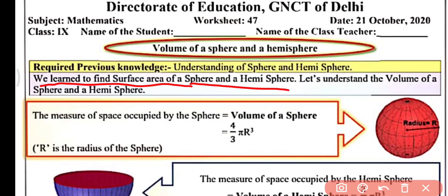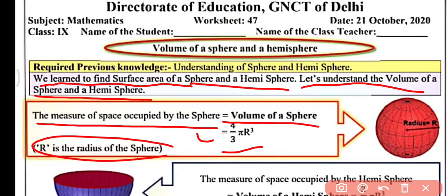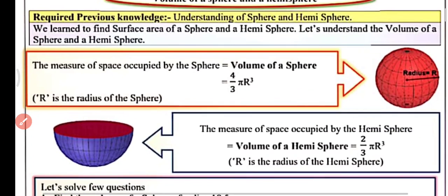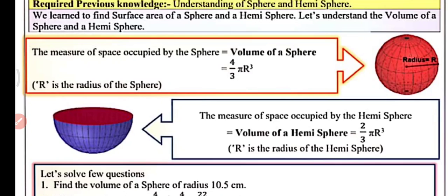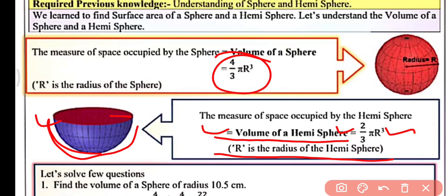We have learned about the surface area of sphere and hemisphere in the previous video, worksheet 46, so you can watch that from the playlist. Now let's understand the volume of a sphere and hemisphere. The measure of space occupied by the sphere is known as the volume of sphere. Hemi means half of the sphere, so the measure of space occupied by the hemisphere is known as volume of hemisphere, and that is half of the volume of sphere, which is 2/3 π r³ cubic units, where r is the radius of the hemisphere. The hemisphere has a curved surface and a flat circular surface.